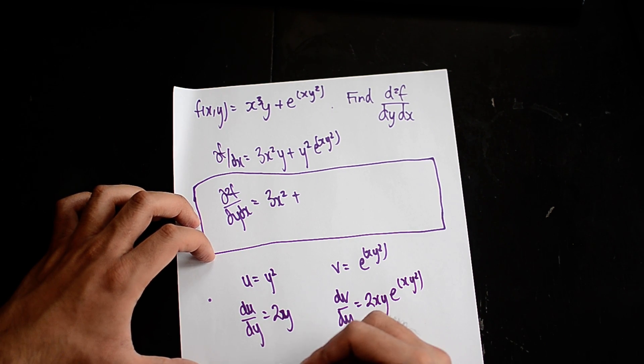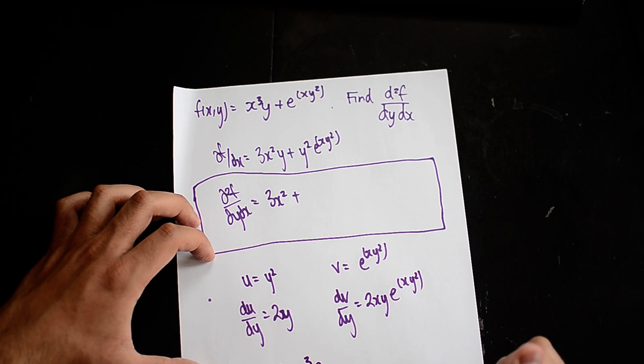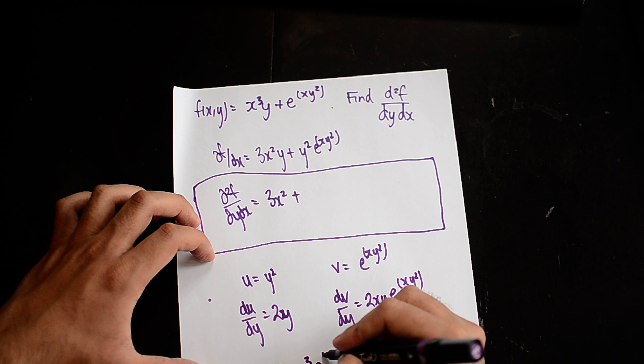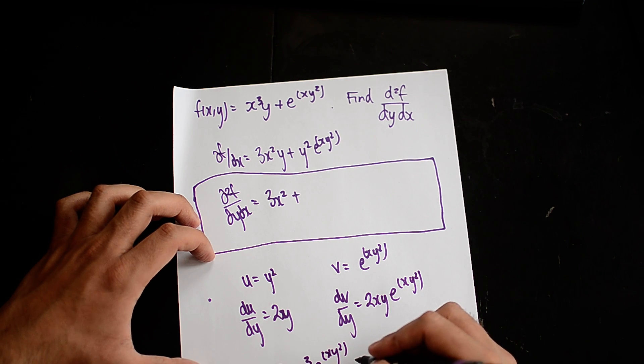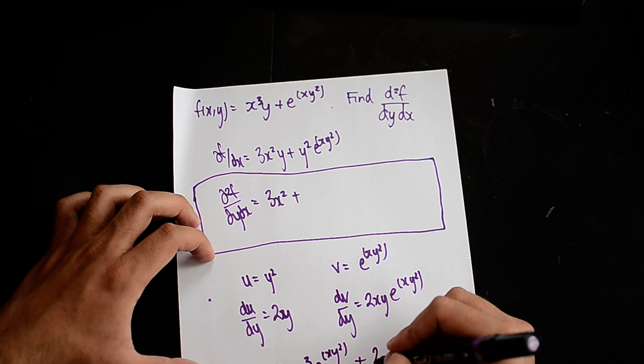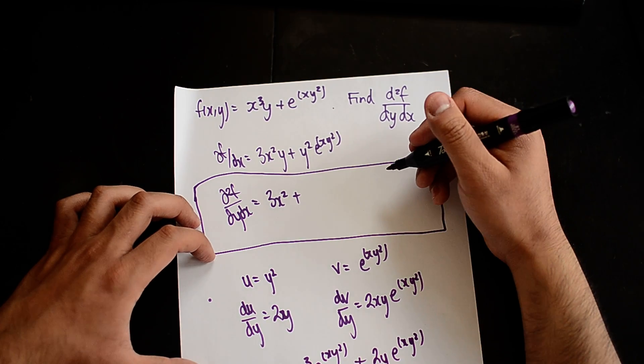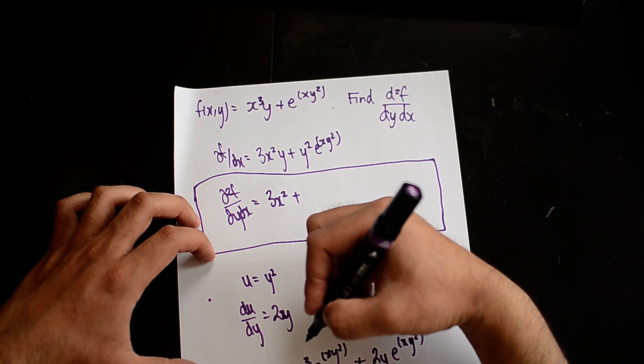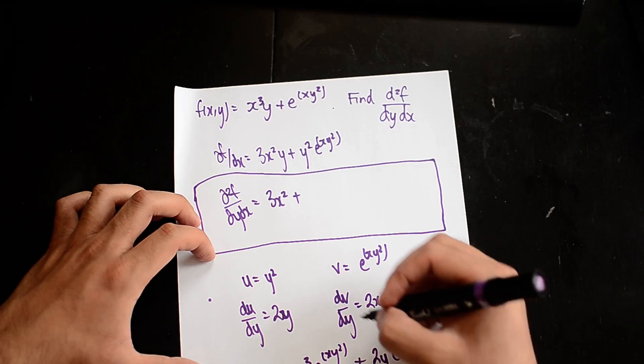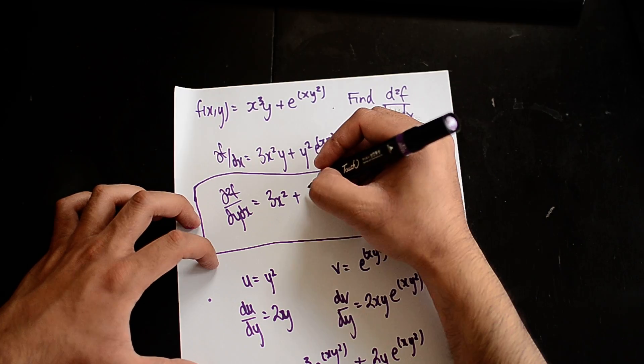Using the product rule, I then get 2xy³ (u times dv/dy) e^(xy²) plus 2y e^(xy²). So my answer for the differential of this is all of here will just be added on up here.